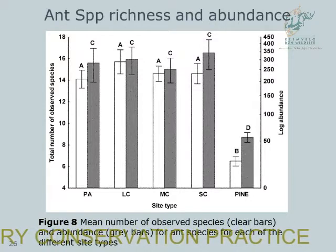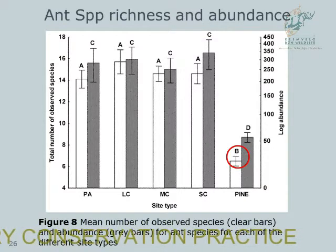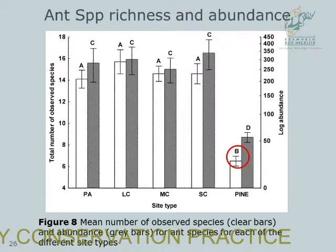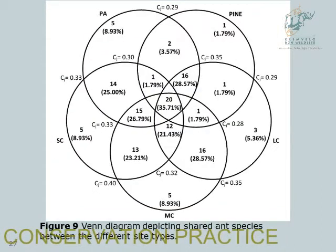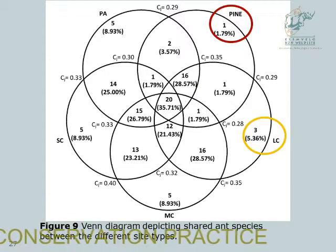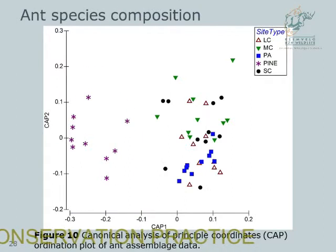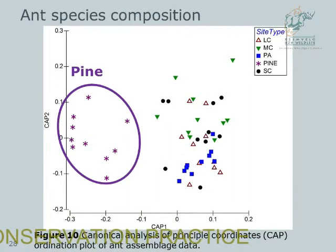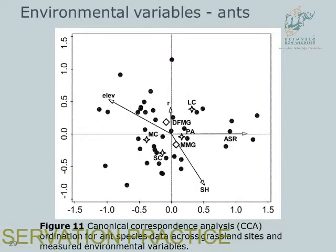Moving on to the ants: again, pine plantations contained significantly fewer ant species, but fragmentation did not seem to be such an important factor for them, as corridors of different sizes were comparable to the protected area in species richness. Pine plantations had one unique ant species, large corridors had three, and the protected area, small corridors, and medium corridors each contained five unique ant species. Again, pine plantations were significantly different in ant species composition, but there was not such a marked difference in ant assemblages within the corridors and the protected area. The only environmental variable found to significantly influence ant species was elevation.